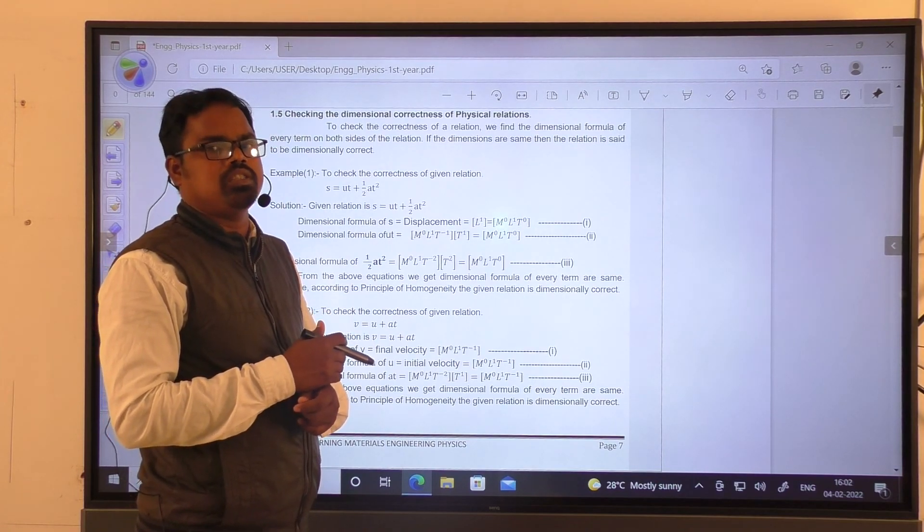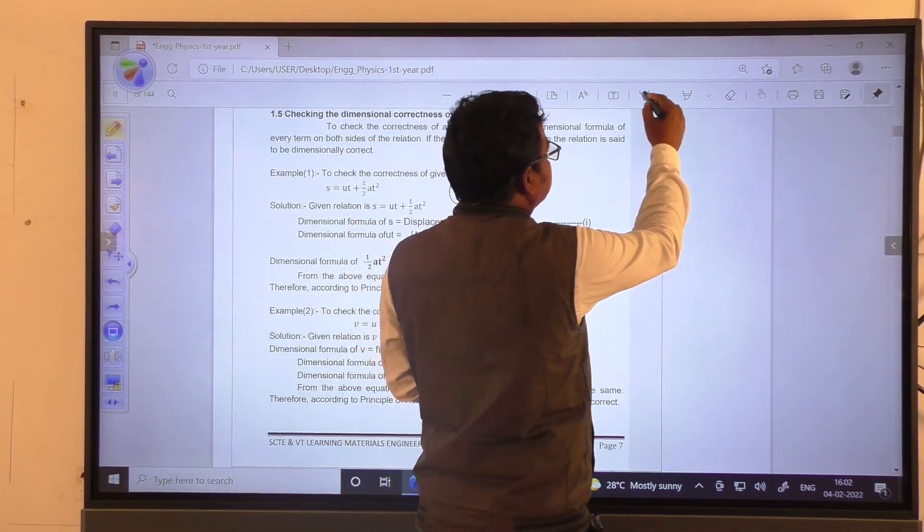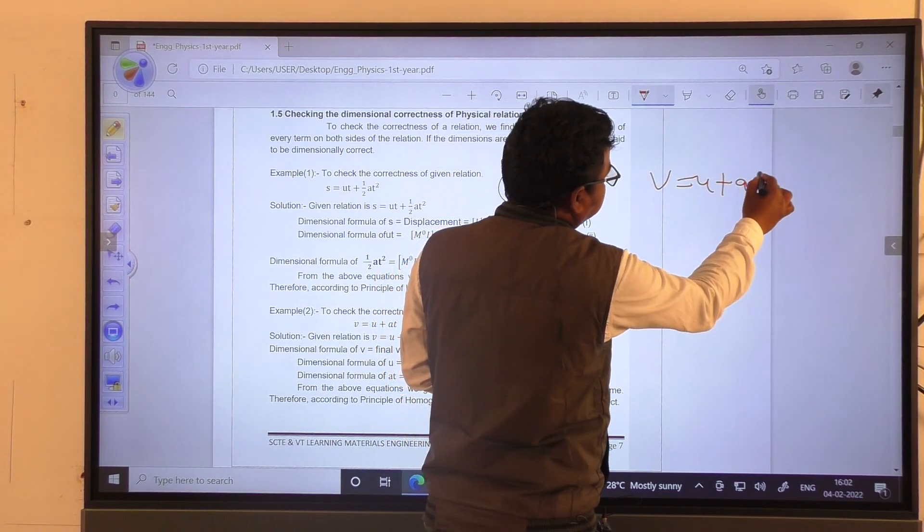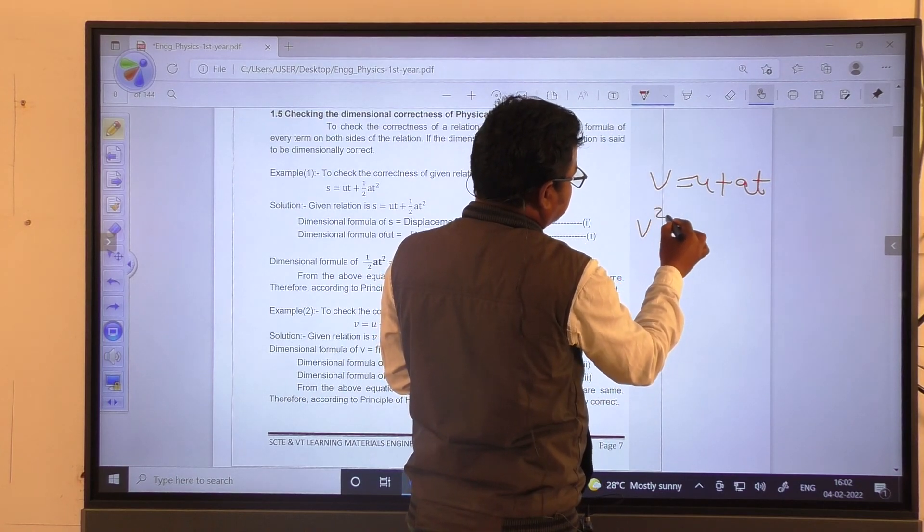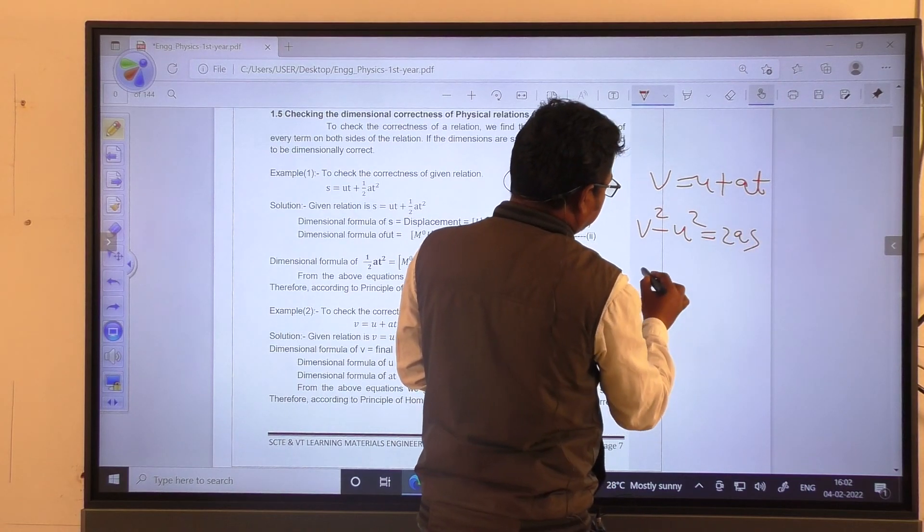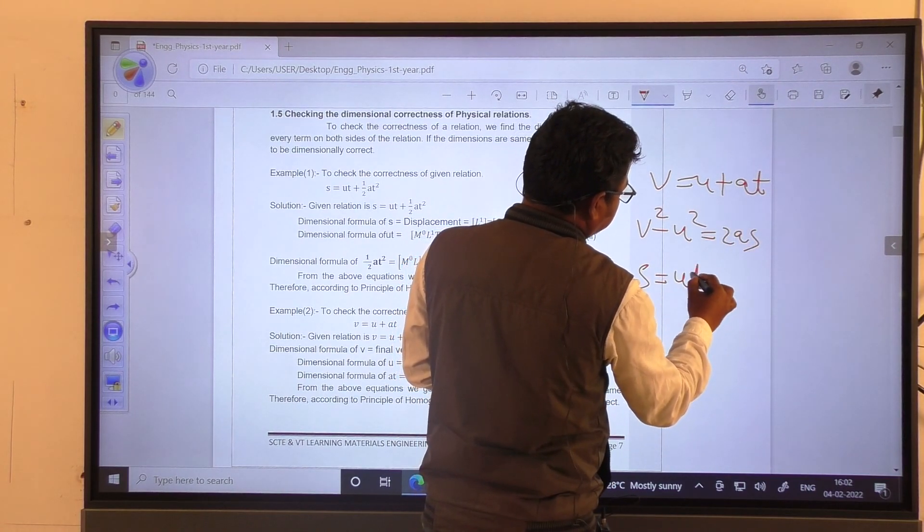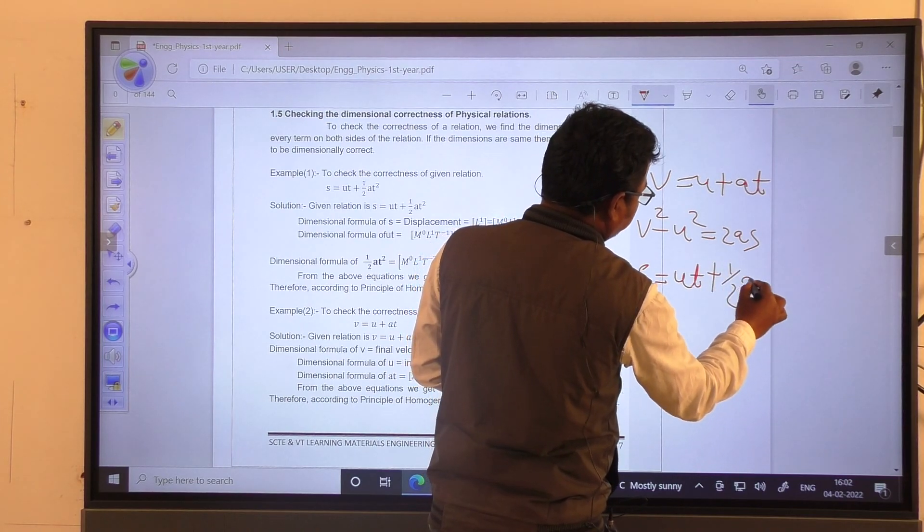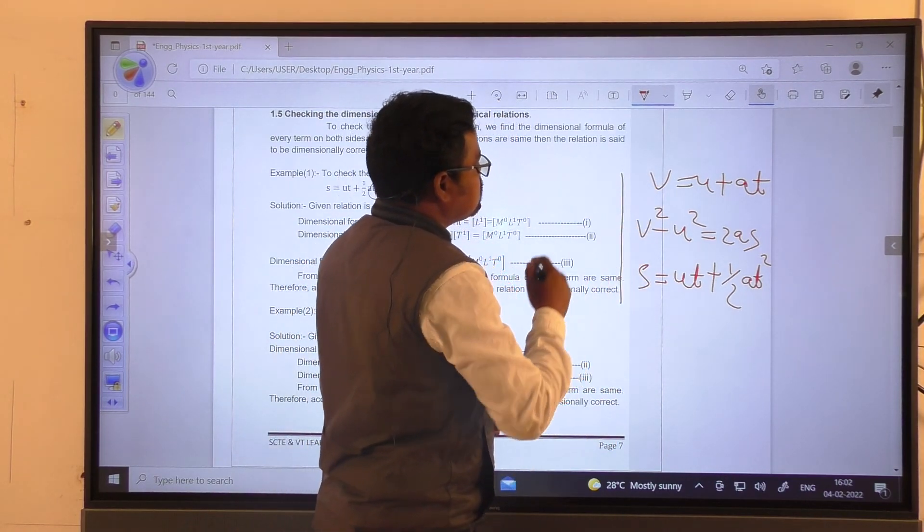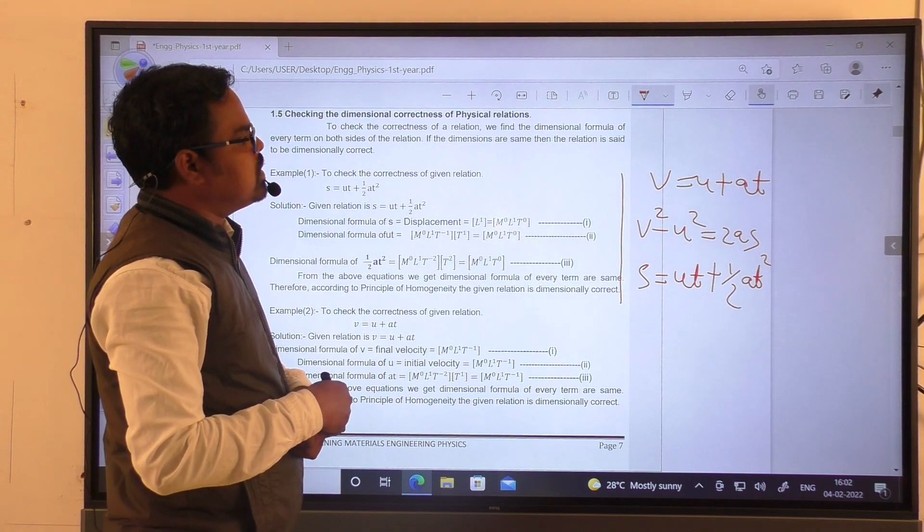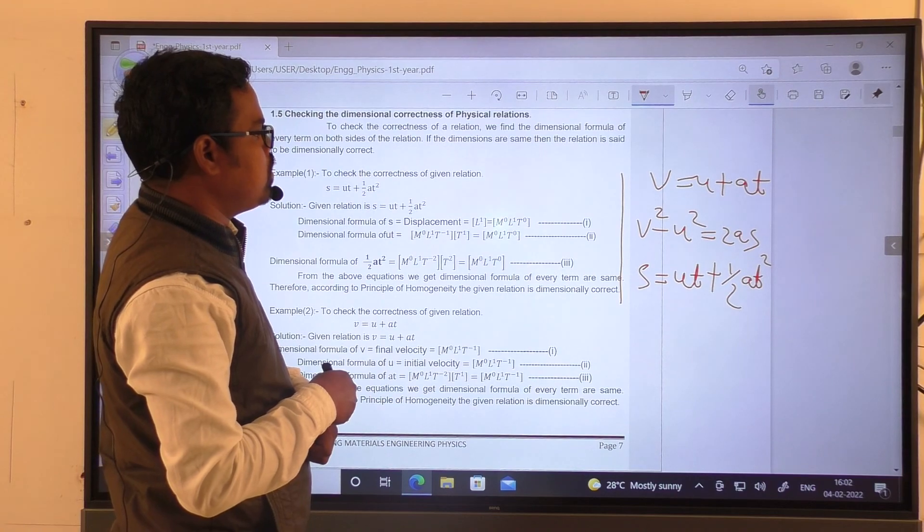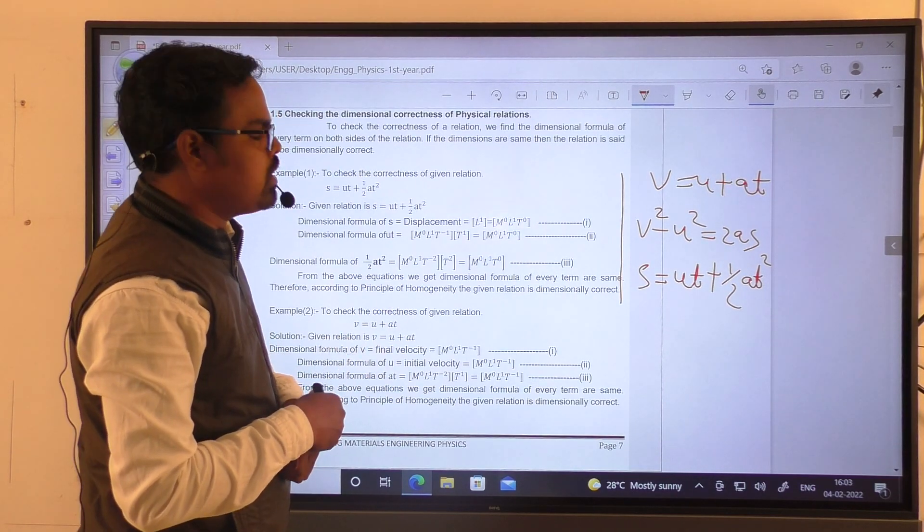Before checking the correctness of a given relation, I am taking some equations of motion like V equals to U plus at, V square minus U square equals to 2as, s equals to ut plus half at square. Out of these three equations, I am taking one example. Let us check the correctness of s equals to ut plus half at square.